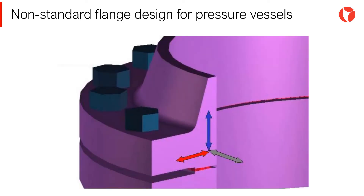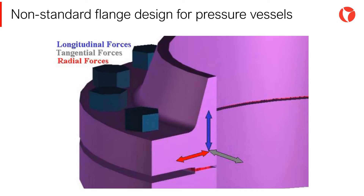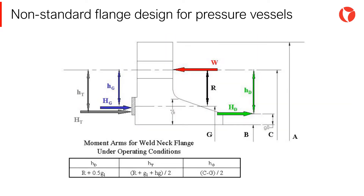Due to the effect of the internal pressure, three types of forces are acting in a flange: longitudinal, tangential, and radial force. These loads create a system of moments around the half of the flange, which in turn induce different types of stresses.